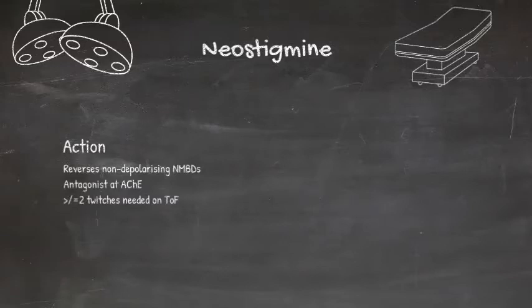However, this happens not only at nicotinic acetylcholine receptors, but also at muscarinic ones. So if you give neostigmine alone, you'll end up with significant muscarinic side effects, such as profound bradycardia. So to counteract this, we give glycopyrrolate as an anti-muscarinic agent.